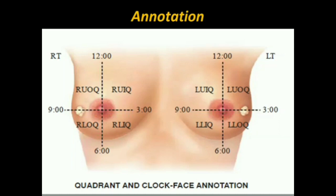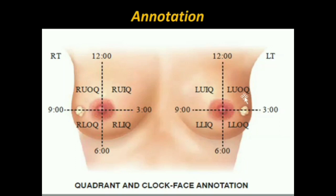In this image it is shown that the breasts are divided into four quadrants. A line is drawn from six o'clock to twelve o'clock and another from nine to three o'clock. For the right breast: upper outer quadrant, upper inner quadrant, lower inner quadrant, and lower outer quadrant. For the left breast: left upper outer, left upper inner, left lower inner, and left lower outer quadrant.